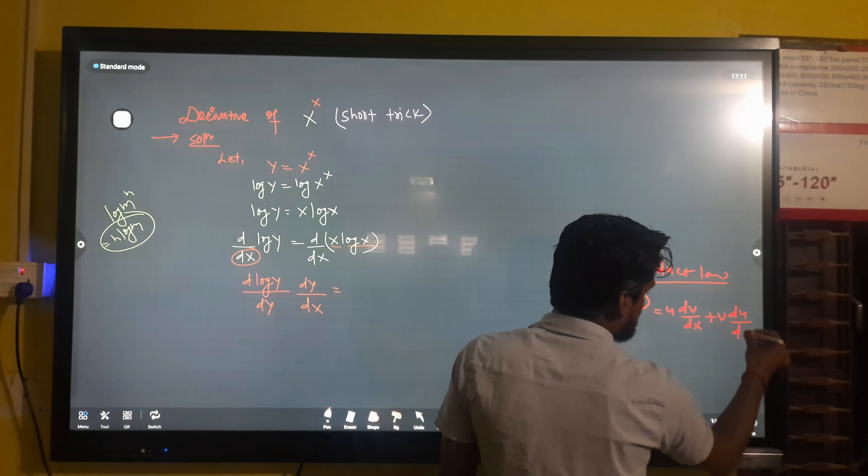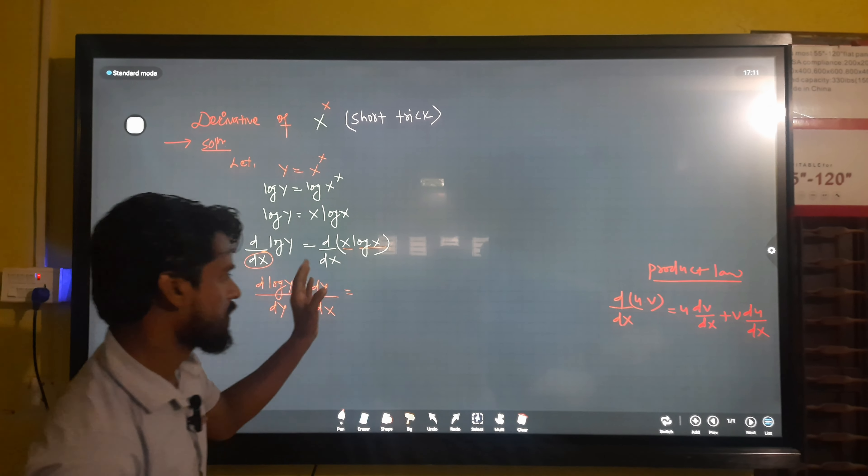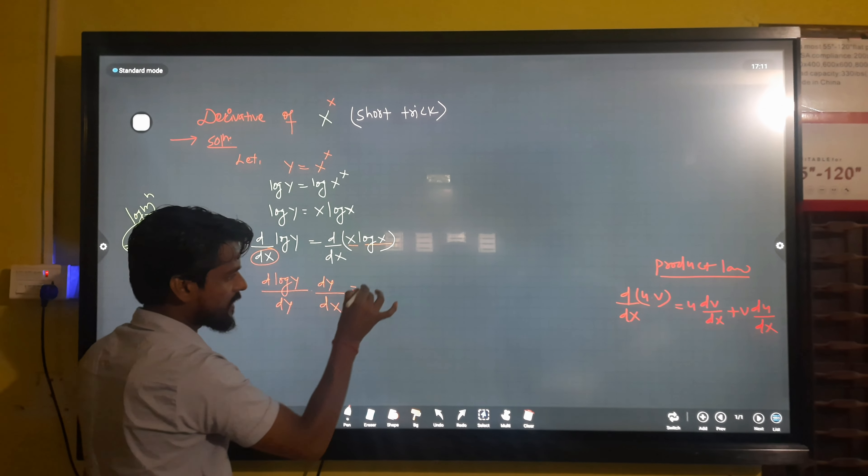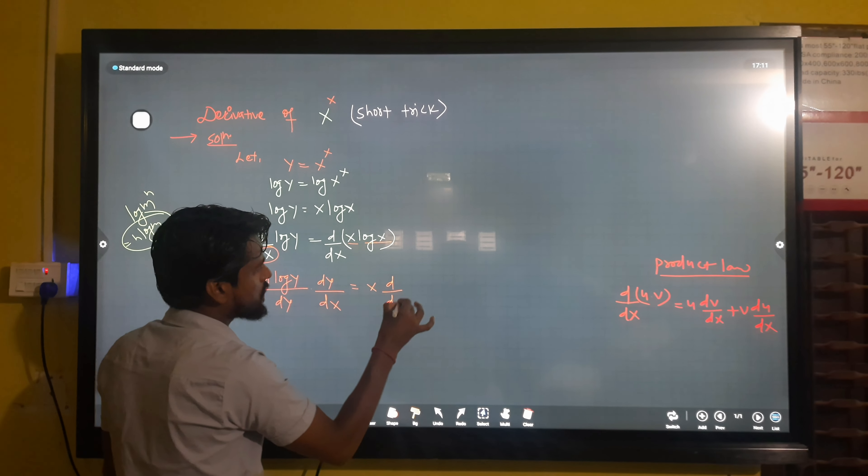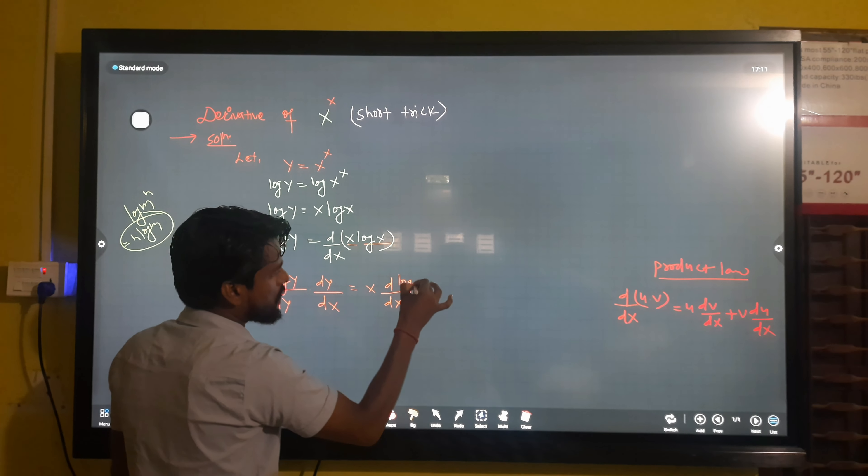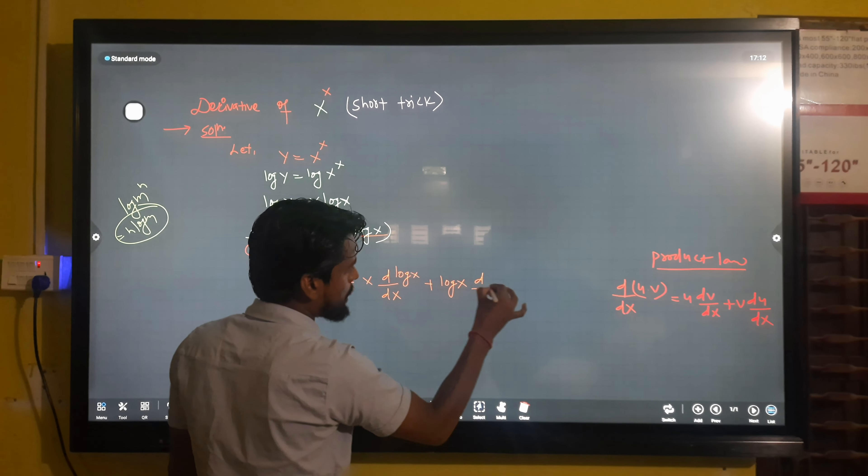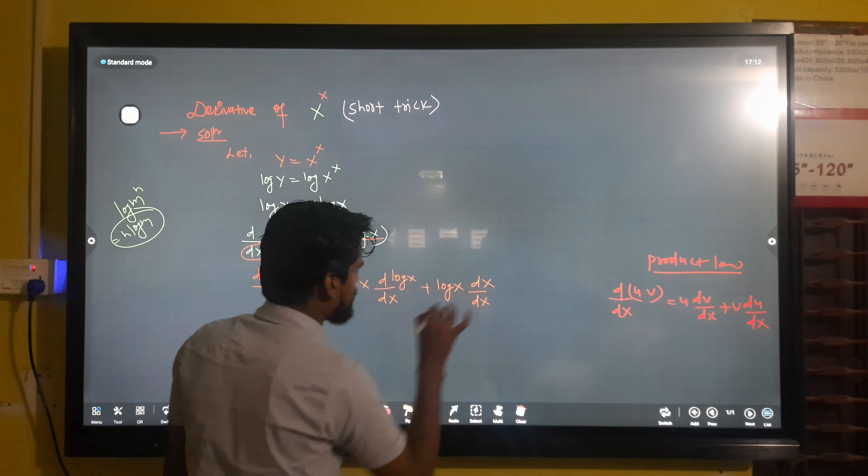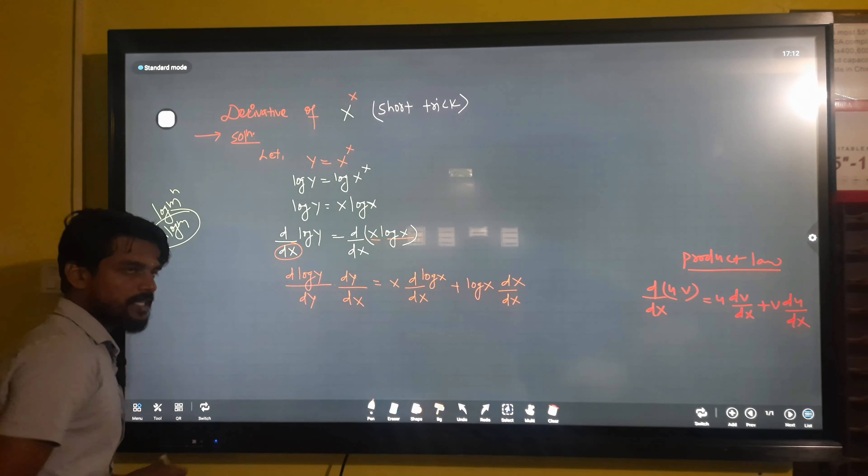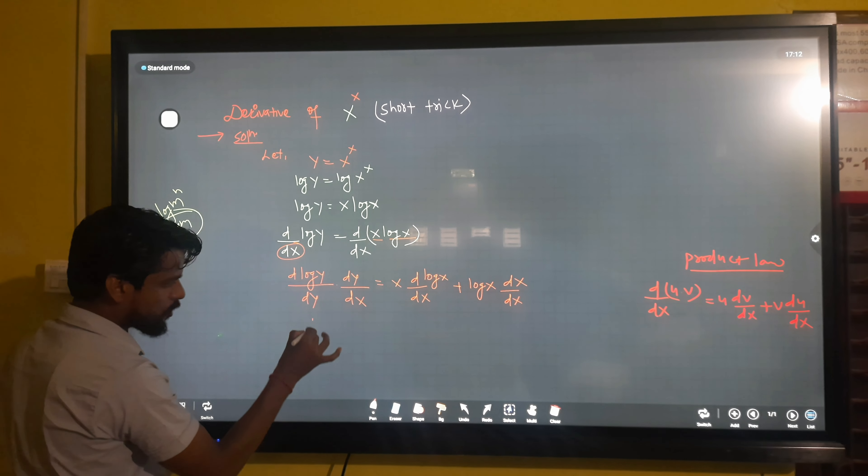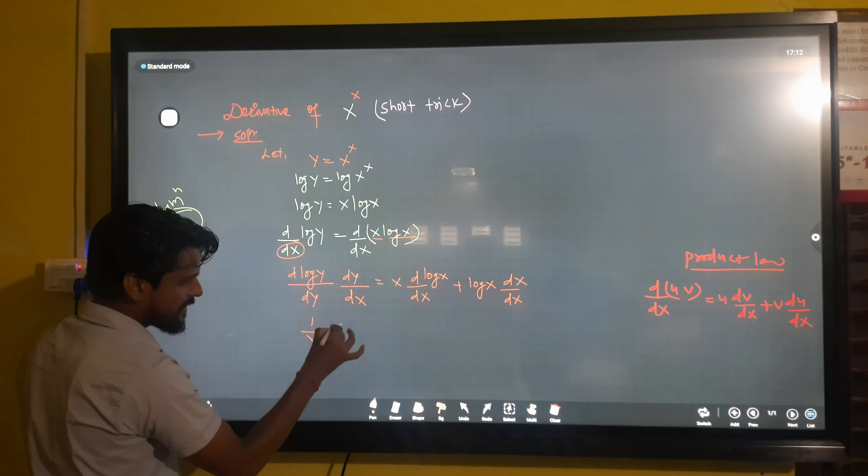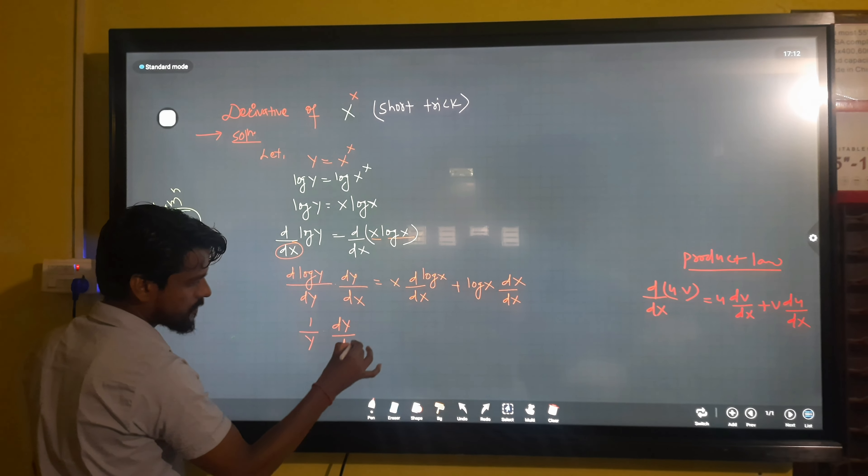So we have to apply this formula here. Let u be x and v be log x. So x times d by dx of log x plus log x times d by dx of x. The derivative of log y comes as one by y.